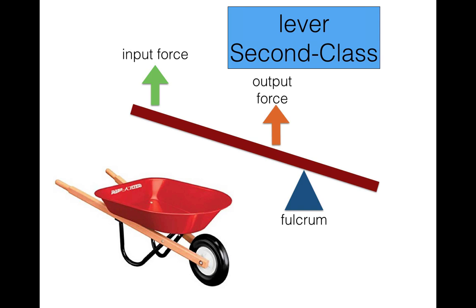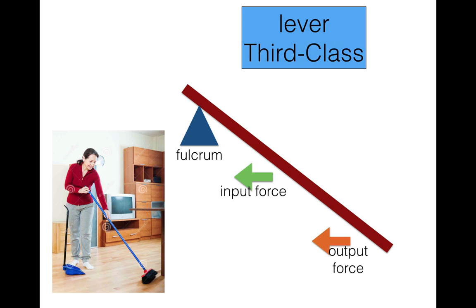The real-life experience that best illustrates a second class lever is a wheelbarrow. You lift it up by the handles, the output force is applied to the middle position, and your fulcrum — which would be your wheel — is on the outside. The third class lever is best illustrated by a broom sweeping the floor. The fulcrum is the fixed position closest to your body, you apply the force in the middle position, and the output — where the work is being done — is at the third position on the far end.